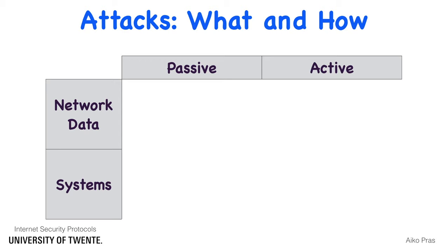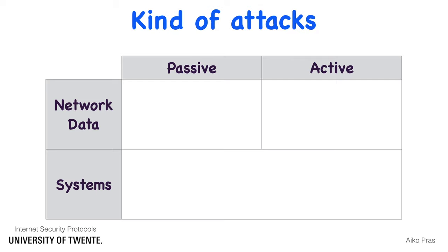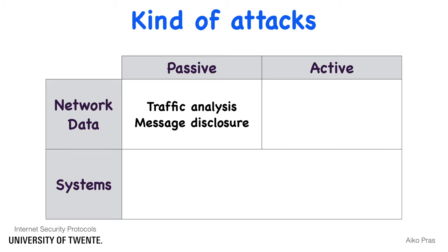Now that we know what is being attacked and how, we can organize the various kinds of attacks. Passive attacks on network data can be either the analysis of traffic patterns — finding out who communicates with whom — or the disclosure of message contents, reading the contents of traffic exchanged over the network.